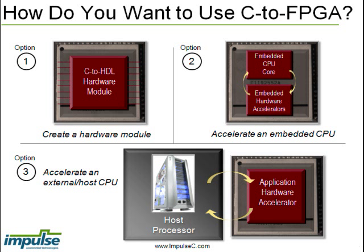Impulse-C can also be used to generate processor accelerators for embedded systems and embedded systems on FPGA. And finally, Impulse-C can also be used to generate co-processor accelerators for high-performance computing.